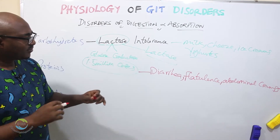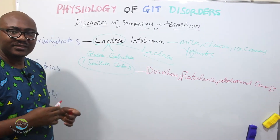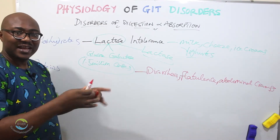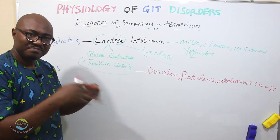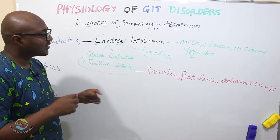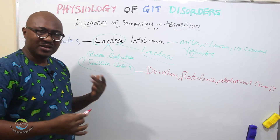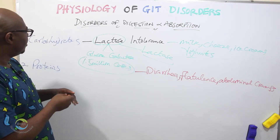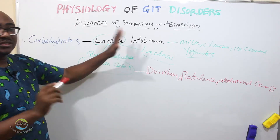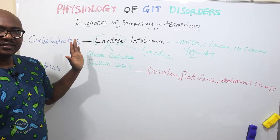So diarrhea, flatulence — that is, passing out a lot of gas — and abdominal cramps are the common symptoms of lactose intolerance.